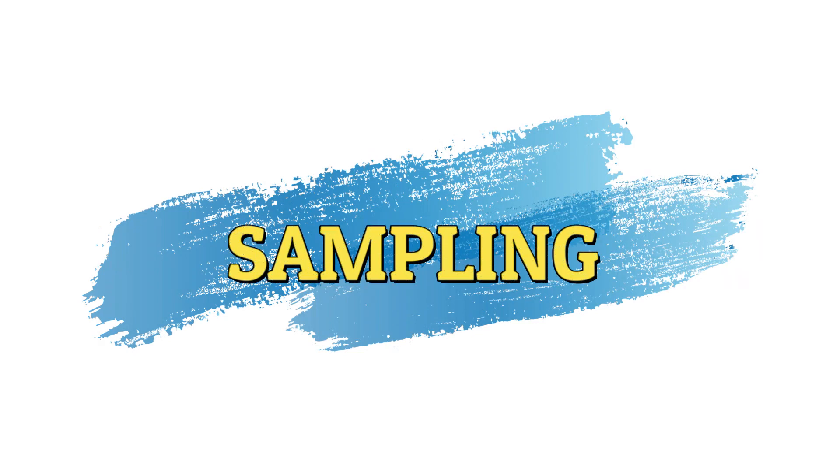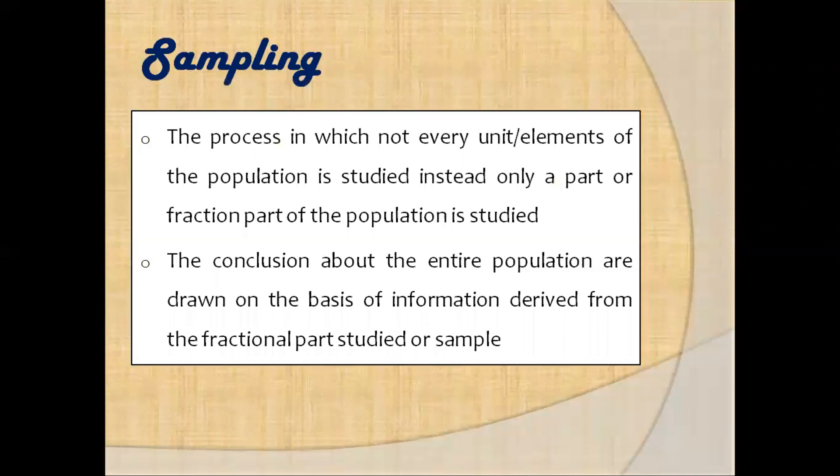With this short background we will first see what is sampling in research. Sampling is when only a fraction of the population is studied instead of the entire population, and the information derived from the fraction of population subjected to study will give us a general idea or conclusion about the population characteristics.